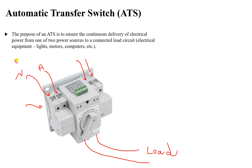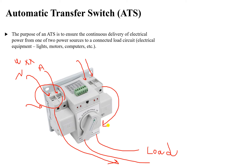What this automatic transfer switch does is ensure the continuous delivery of electrical power. If our utility has a problem, this automatic transfer switch will switch the electrical power away from the utility grid and start taking electrical power from the backup source or the other utility grid, in order to ensure continuous delivery of electrical power.